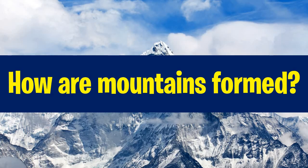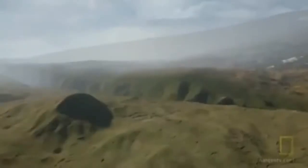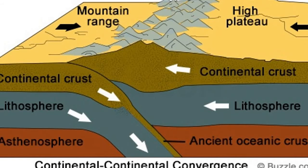So we go back to our question: how are mountains formed? There are two continental crusts colliding with each other. As a result, since there is no subduction, we have elevation on top — the portion slowly rises. Then we have the formation of mountain ranges. Mountain ranges are series of mountains connected to each other. They are found along the plate boundary, so not just one mountain but a series of mountains, which we call mountain ranges.